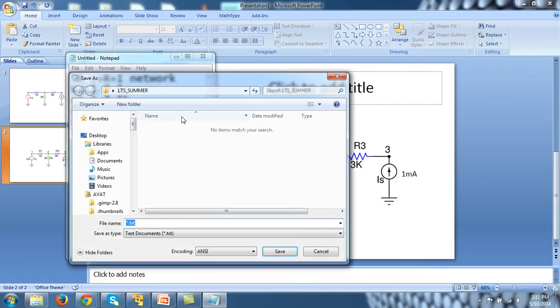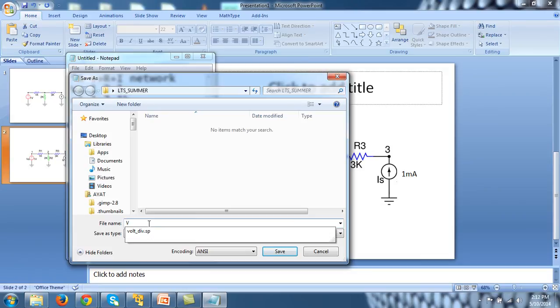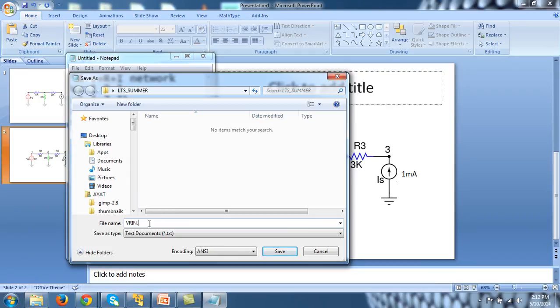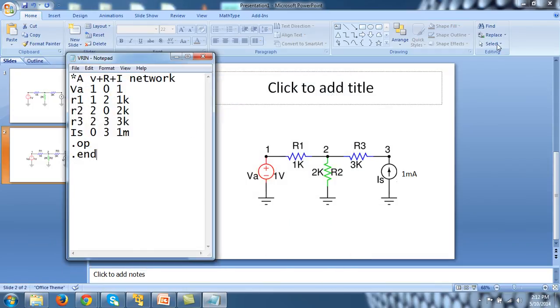And file, save as. LTspice sum up. This is the folder where I want to save my design. And let me write rci voltage resistor and i network dot CIR. Don't forget this extension. Okay. And this should be changed to all files. Save. And that is it.